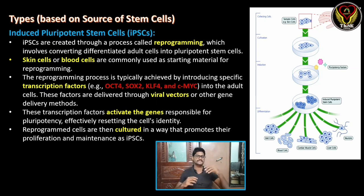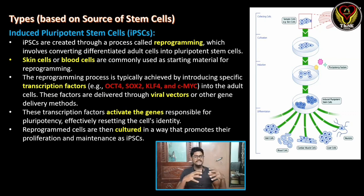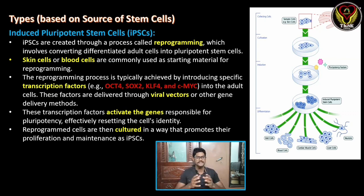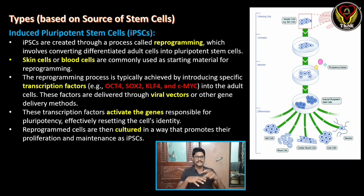We introduce transcription factors. In the picture, there are skin cells in culture. The transcription factors used are OCT4, SOX2, and KLF4 — these are the key narration factors. So what we do is cause genetic changes using these factors.